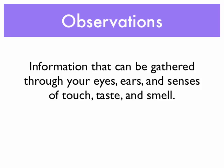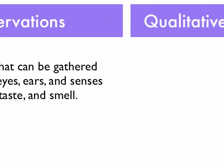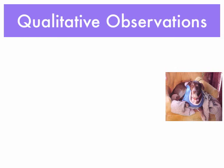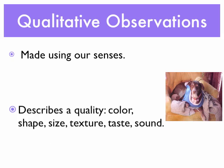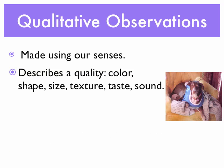Observations come in two different types. Our first type is a qualitative observation. This is a describing observation. We're going to use our senses to make this observation, and it's going to describe a quality — so maybe that is color, maybe it's the shape of something, the texture of something, the sound of something.